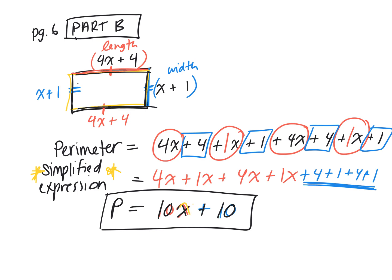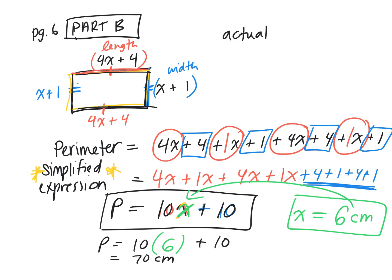What if I say to you instead of writing x there I'm going to tell you that x is equal to six centimeters. So now I'm telling you instead of putting an x there you're going to replace it. You know what x is equal to, so we're going to take that and we're going to plug it in, right? What does 10x mean, does it mean 10 plus x or does it mean 10 times x? So I'm going to do 10 times what? Good. Plus 10. PEMDAS, yep, 10 times 6, 60 plus 10 equals 70 centimeters.